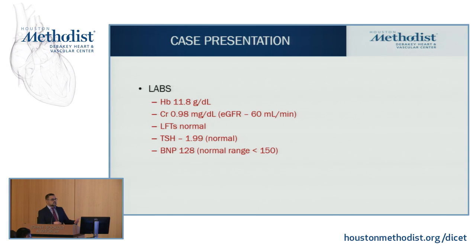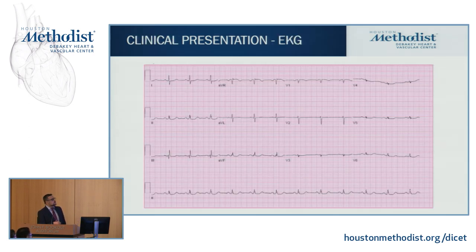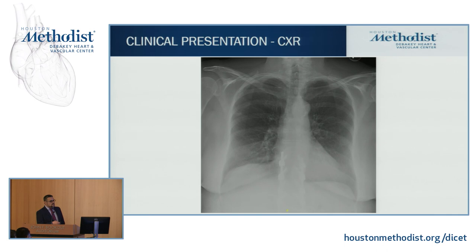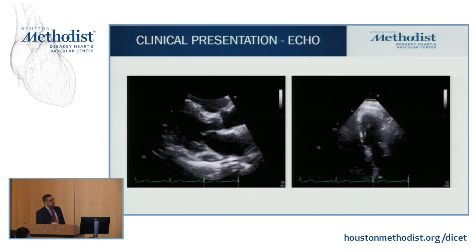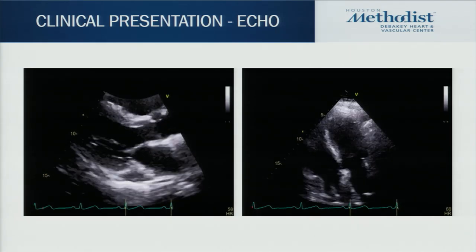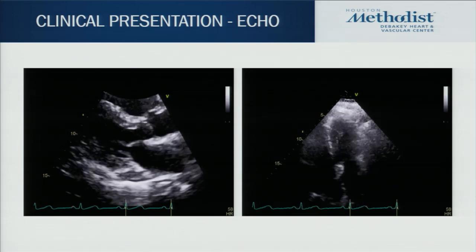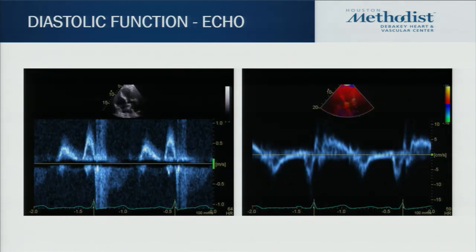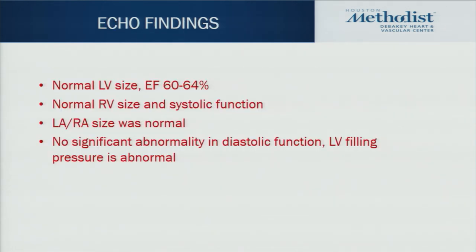First-tier testing: TSH normal, LFTs normal, BNP normal. EKG showed sinus rhythm with no acute ST-T changes, and possibly some low voltages in the anterior leads. Chest x-ray showed mild interstitial prominence but no clear infiltrates — overall looking decent. Echocardiogram showed normal ejection fraction of 60 to 64%, normal LV size, normal RV size and systolic function, normal LA and RA size, no significant diastolic dysfunction, and normal LV filling pressures. So the echo suggested nothing was going on.